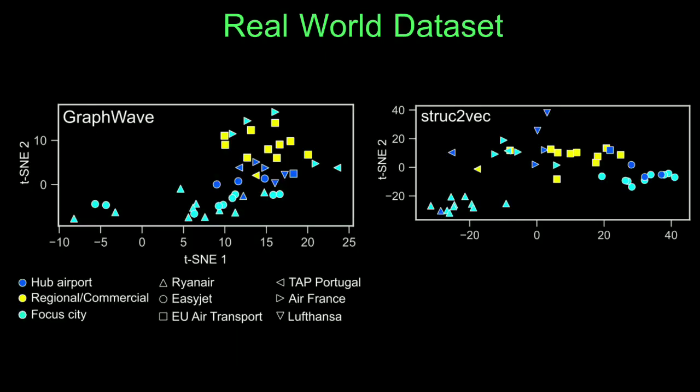Authors also run the algorithm on the real-world dataset which is European Airline dataset. This dataset contains the flights of each airline with given destination and departure airports. They expect to cluster the airports and the airlines that use these airports more frequently.